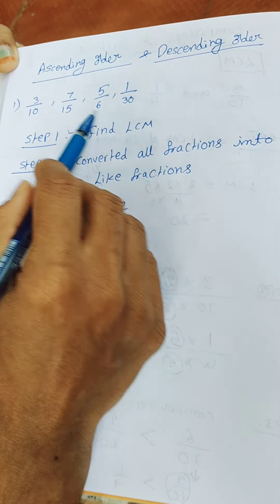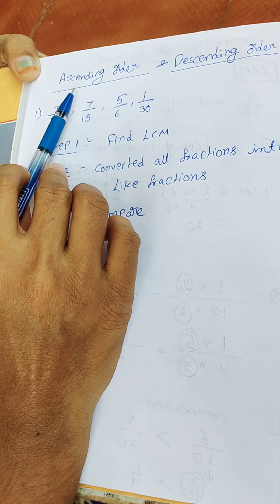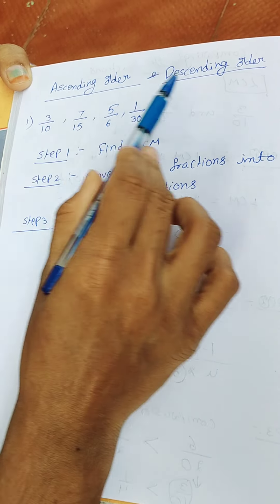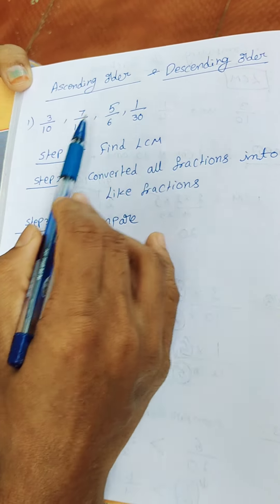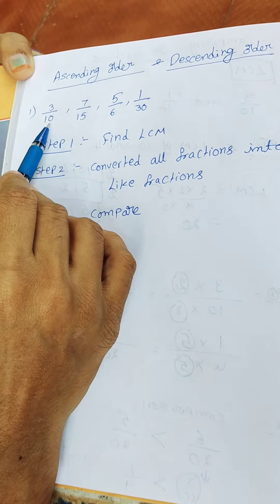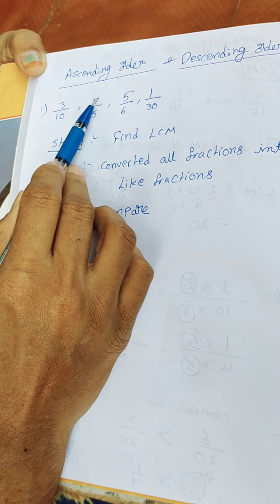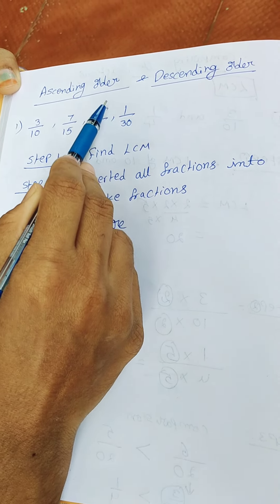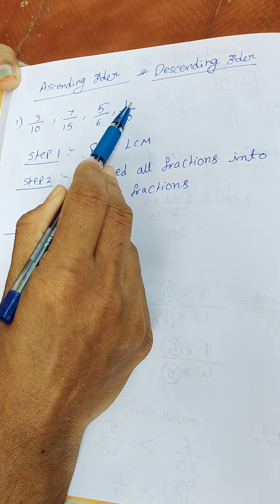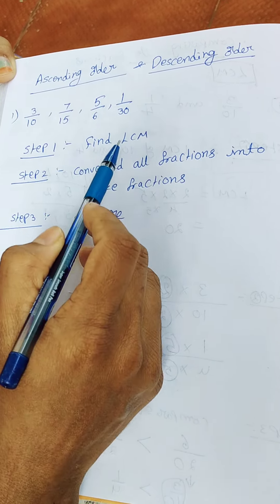Hi friends, in this video I show how to write ascending order and descending order of fractions. Here, the fractions are 3 by 10, 7 by 15, 5 by 6, and 1 by 30.